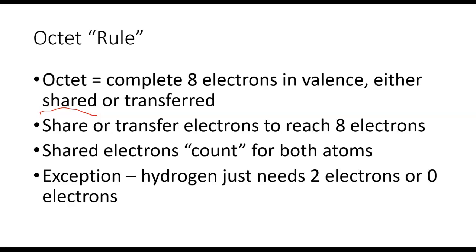What you want to do is you want to share or transfer electrons to reach eight electrons. The shared electrons are going to count for both atoms sharing. The exception to the octet rule that we're going to look at is hydrogen. So hydrogen, it only needs two electrons. Everything else we're going to be looking at is going to need eight.